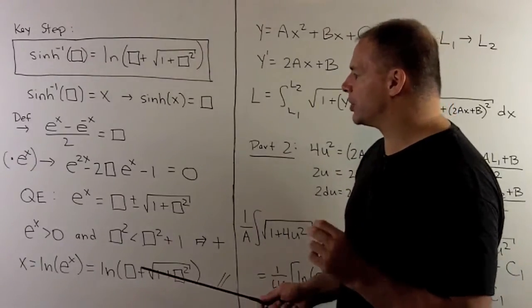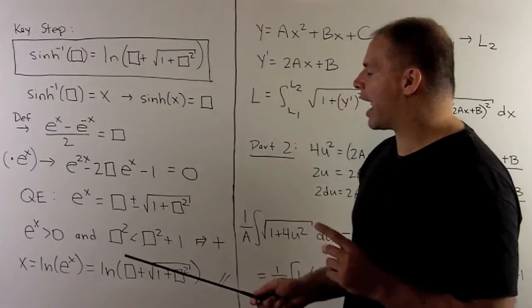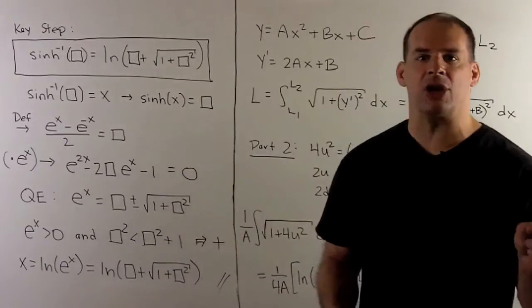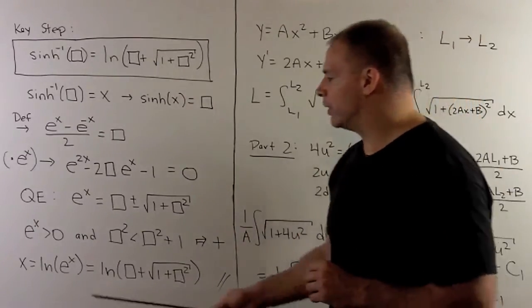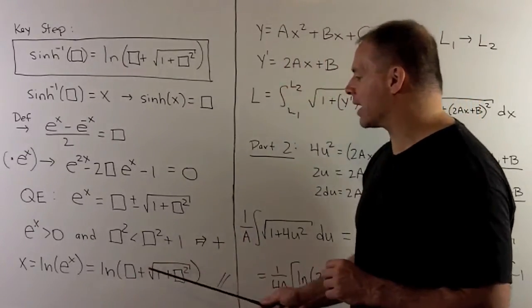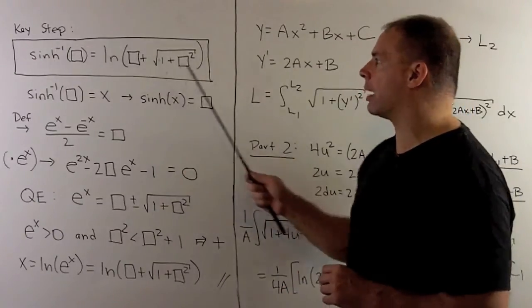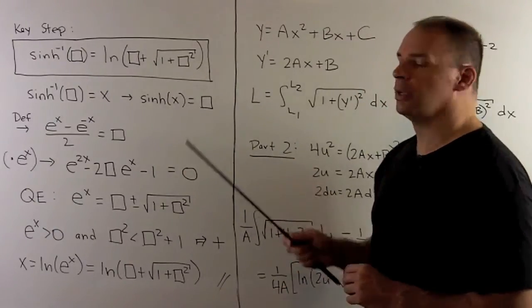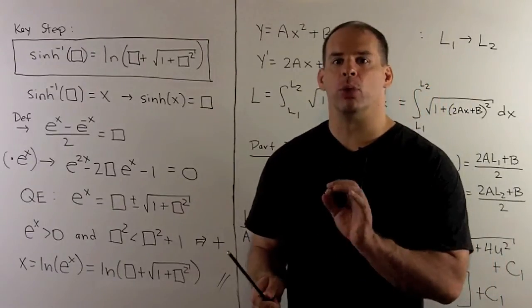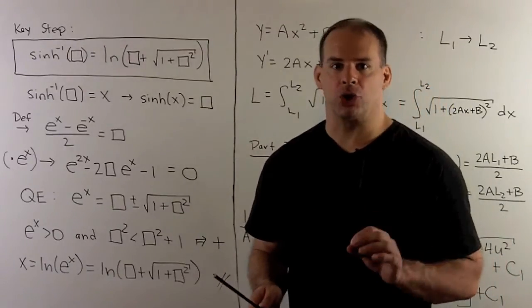That gives us an expression for e to the x. So, I can get rid of the e by just taking natural log of both sides. We have x is equal to natural log of box plus square root of 1 plus box squared, as promised. So, that lets us remove our hyperbolic trig function.